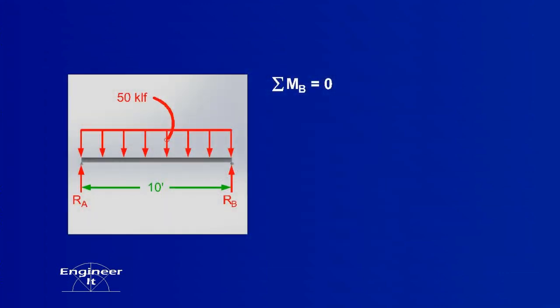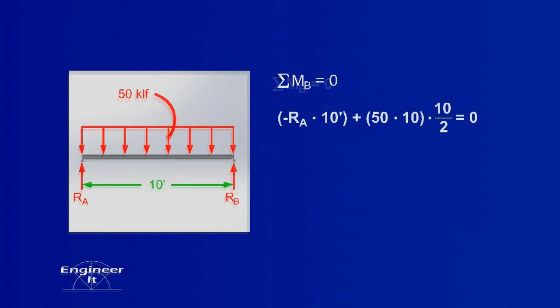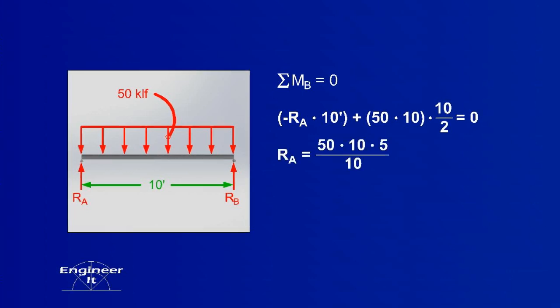To find the equation for the shear force, start by summing the moments about point B. The 50 pound per foot uniform load can be treated as a point load at the center. Solve for the reaction force at point A. The force at point A equals 250 pounds.